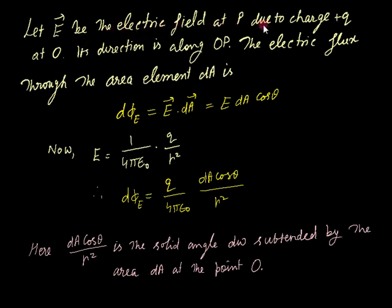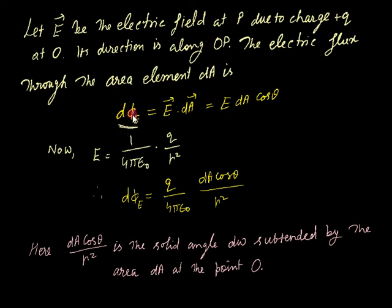Let E be the electric field at P due to charge plus Q at O; its direction is along OP. The electric flux through the area element dA is the differential part: d-phi_E equals the scalar product of E and dA, giving E dA cos theta, where E and dA are the magnitudes of vectors E and dA.